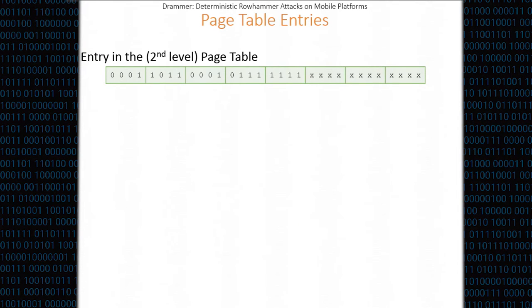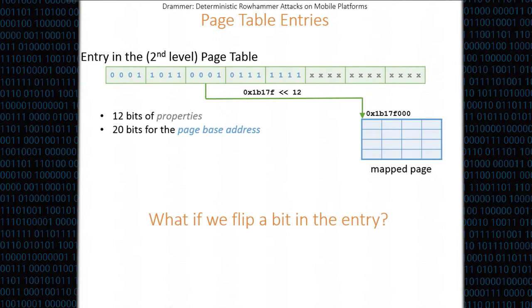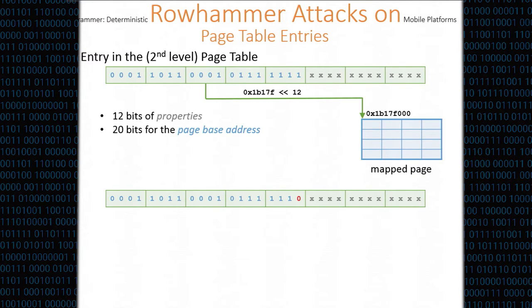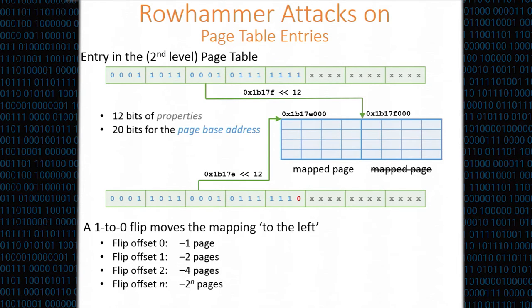Let's look at one entry in the second level page table — a page table entry. It's 32-bit, and the lowest 12 bits are used for properties. We're going to look at the other 20 bits, which define the page base address — basically a page frame number. If you bit-shift these bits by 12, you get a physical address for a mapped page. Now the question is: what happens if we use Rowhammer to flip a bit somewhere in the entry? If we flip the lowest bit of the page table entry, the physical address we're now looking for is exactly one page before the original address. In other words, a one-to-zero flip moves the mapping of a page table entry to the left. Flipping bit 0 goes one page left, bit 1 goes two pages left, bit n goes 2^n pages to the left.